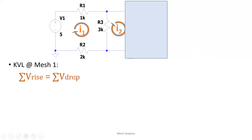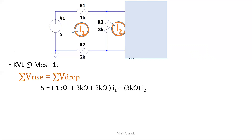For KVL, the summation of voltage rise equals the summation of voltage drop. The voltage sources form the rise side; the voltage drop per resistor forms the drop side. For V rise there is only one voltage source: 5V. So 5V equals — the resistors inside mesh 1 are 1kΩ, 3kΩ, and 2kΩ — so we add them up multiplied by I1: (1k + 3k + 2k)·I1, minus 3kΩ·I2.